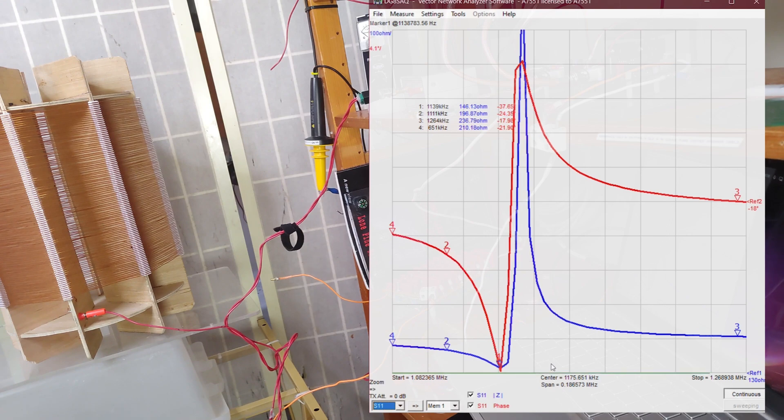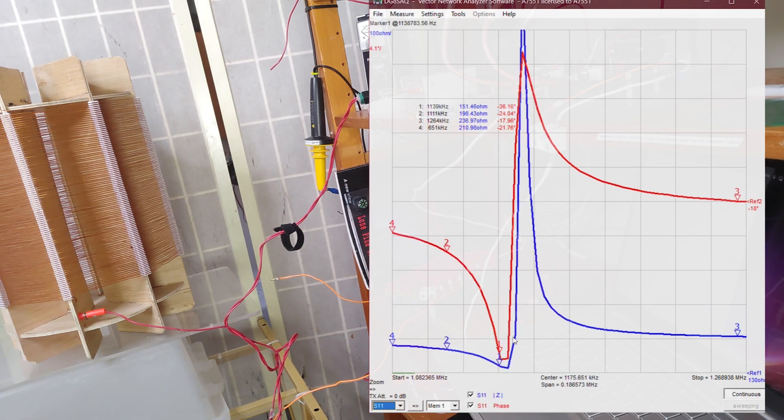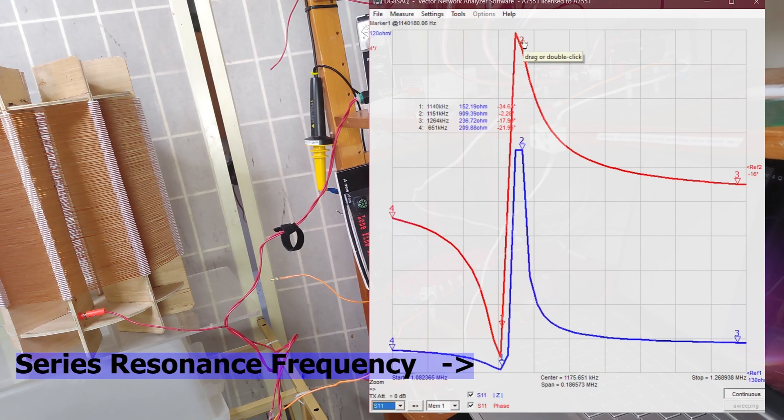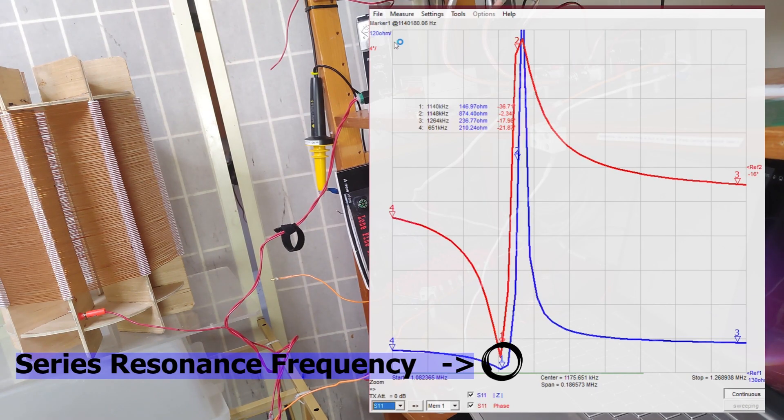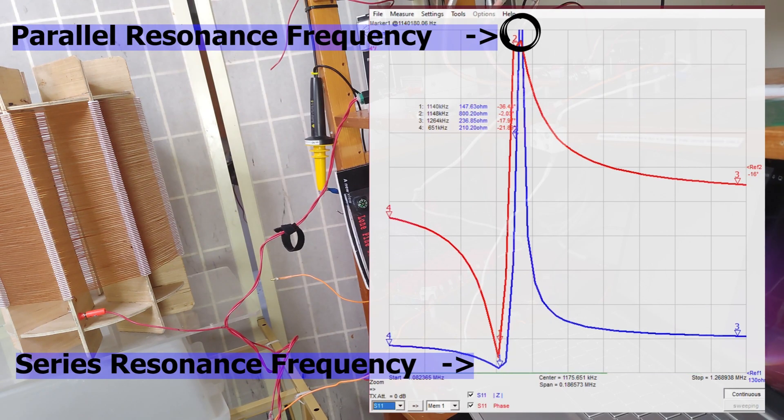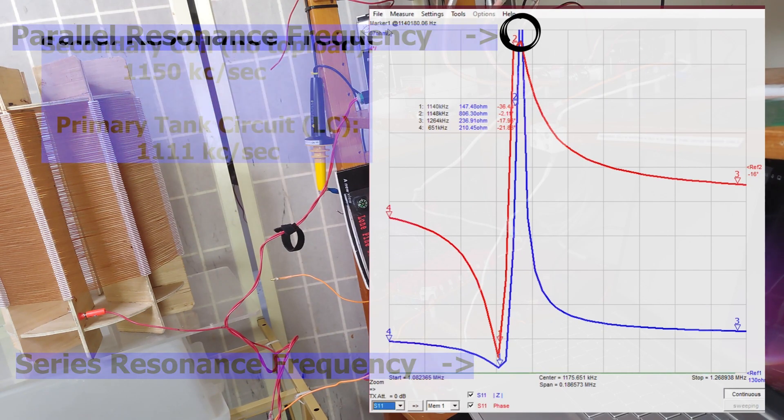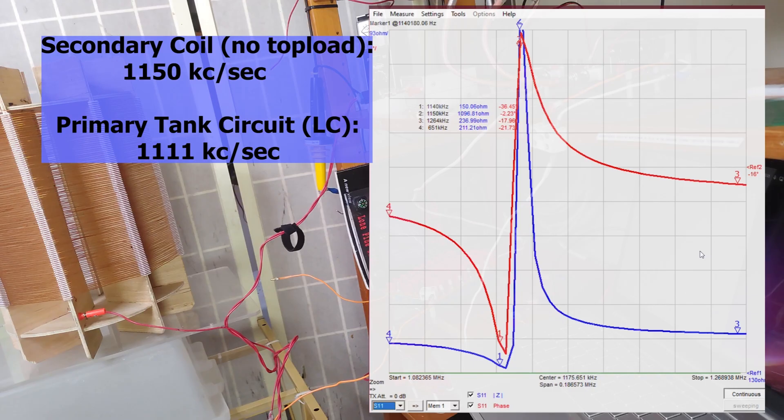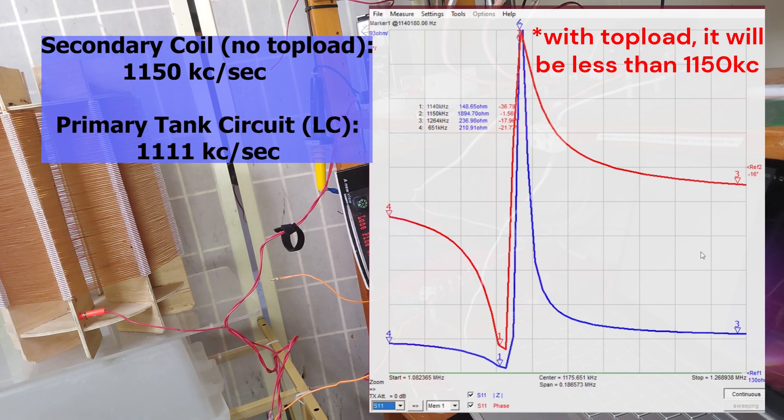Marker 0.2 here is the impedance maximum and that represents the LMD resonant frequency, about 1150 kilocycles. The point is that's very much compatible with the primary tank circuit. They're both around 1.1 megacycles, 1100 kilocycles.